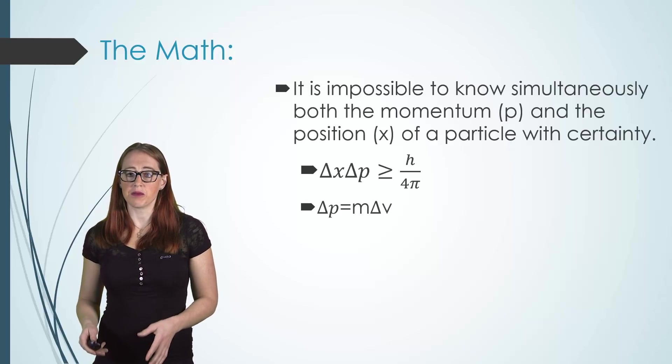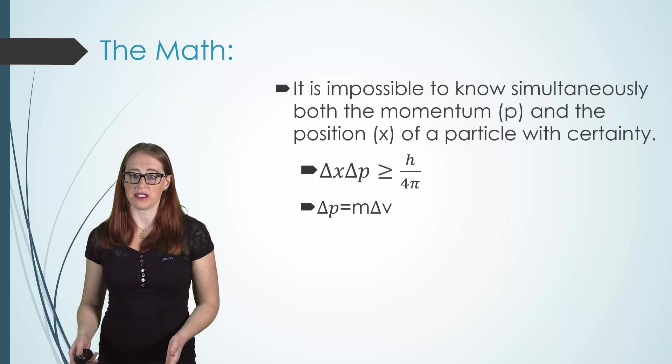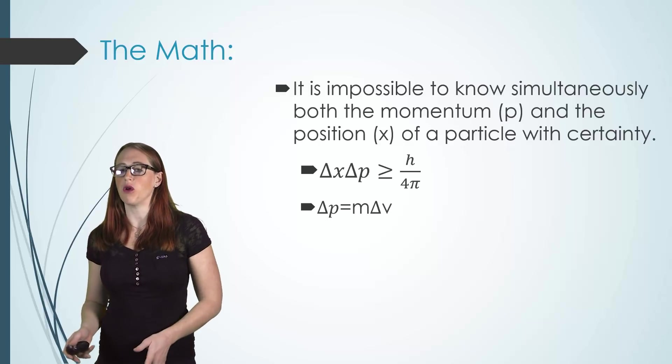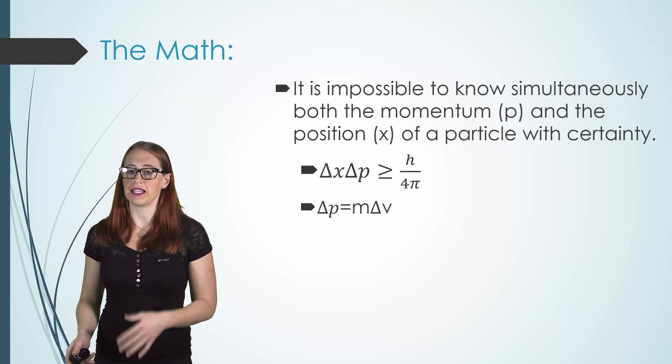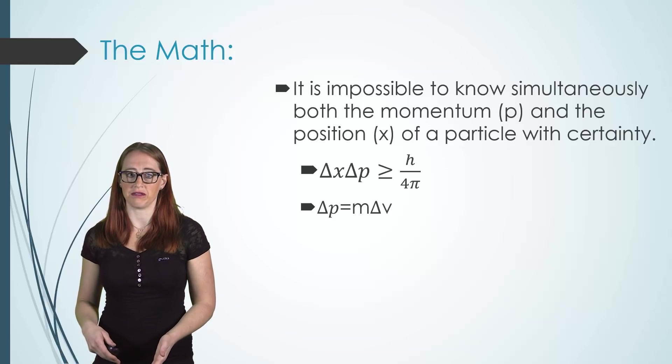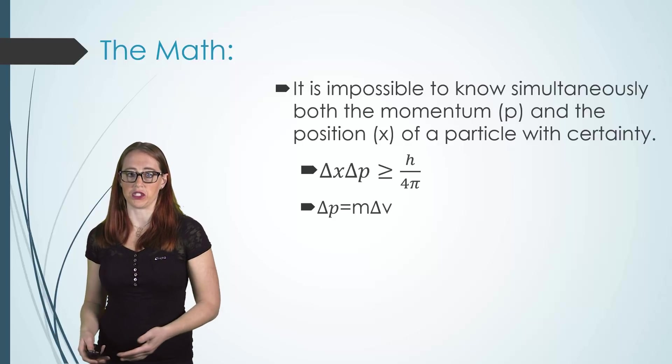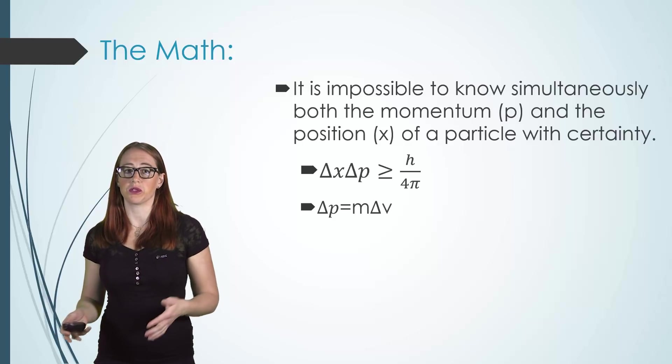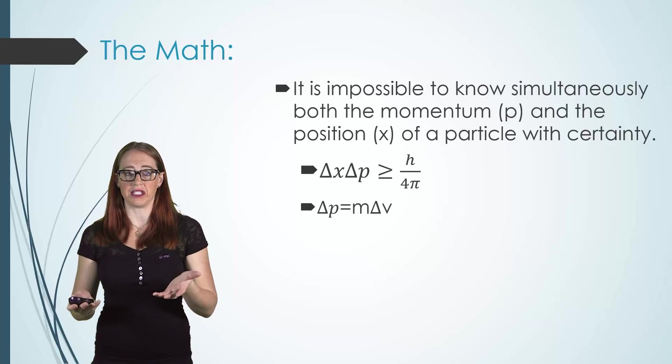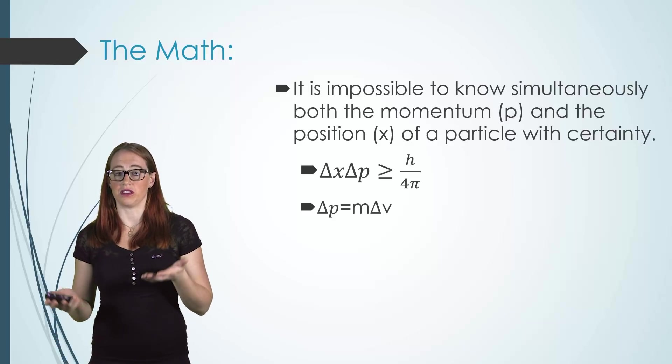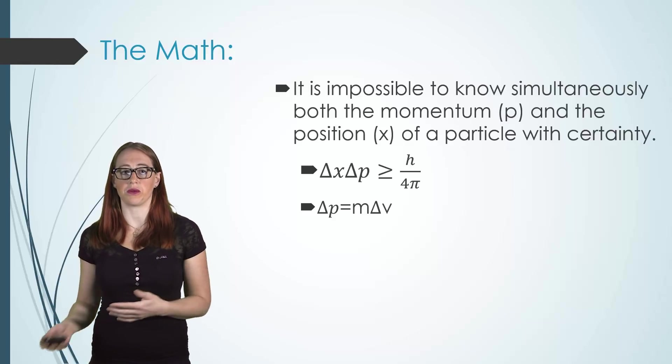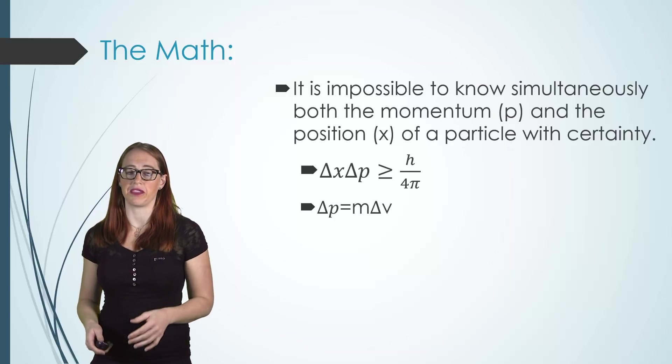Remember here that since momentum is equal to mass times velocity, and since we generally know the mass with certainty, we can say that the mass times the uncertainty in velocity times the uncertainty in position is equal to h over 4π as well. In other words, we can just insert the m·Δv into the Δp and use this equation as well. That's going to be a really common thing we do in problems.